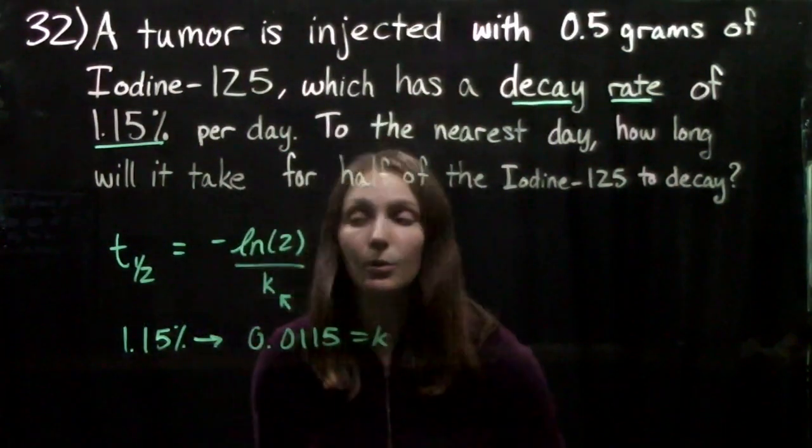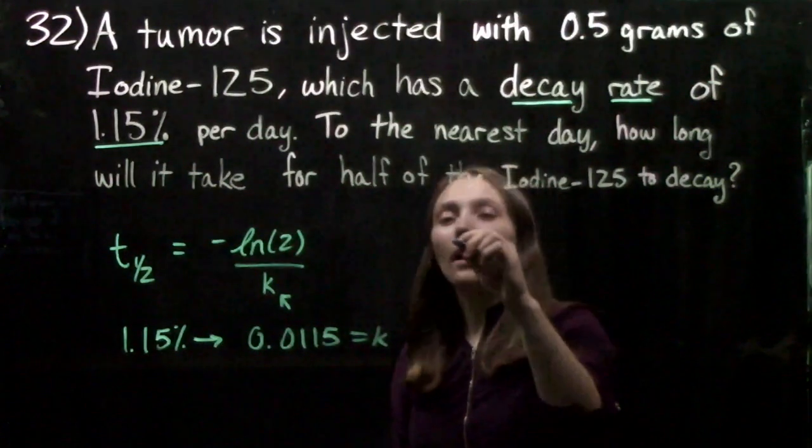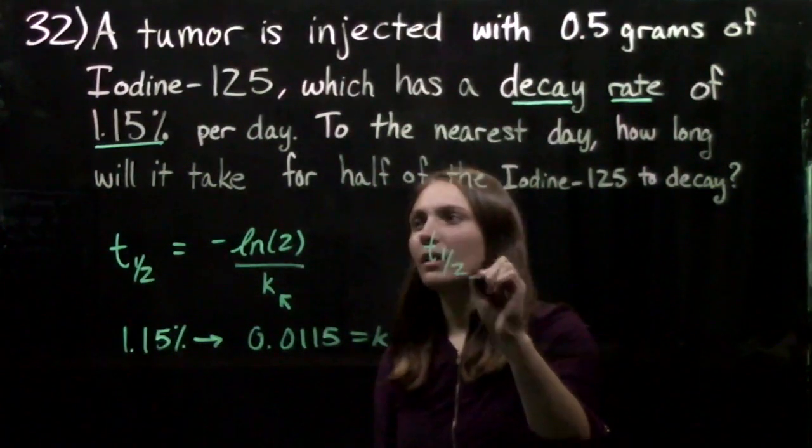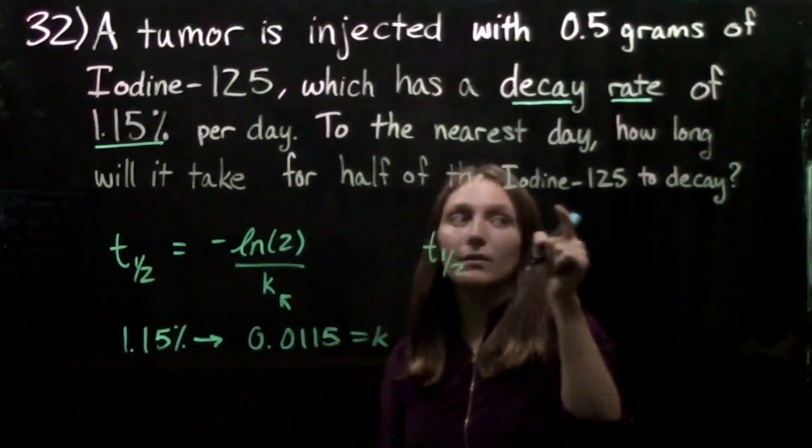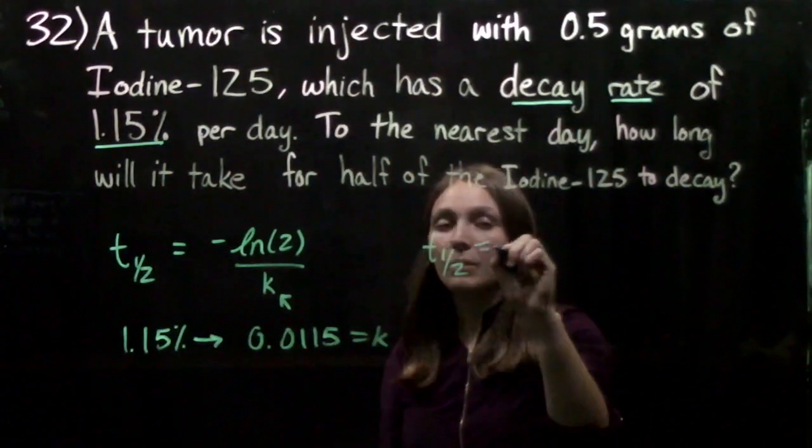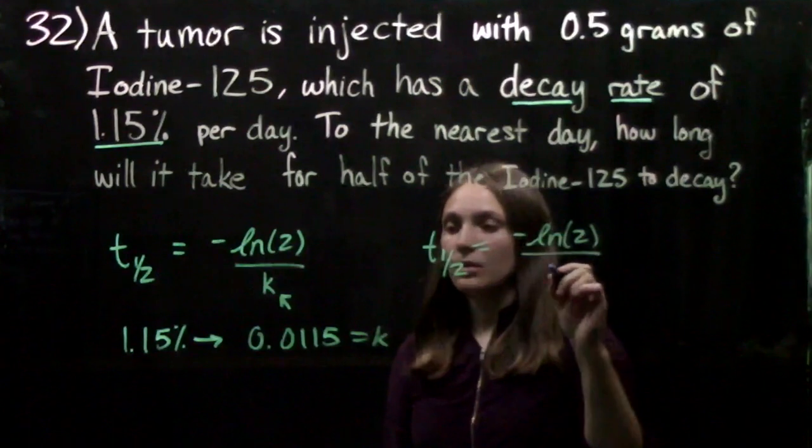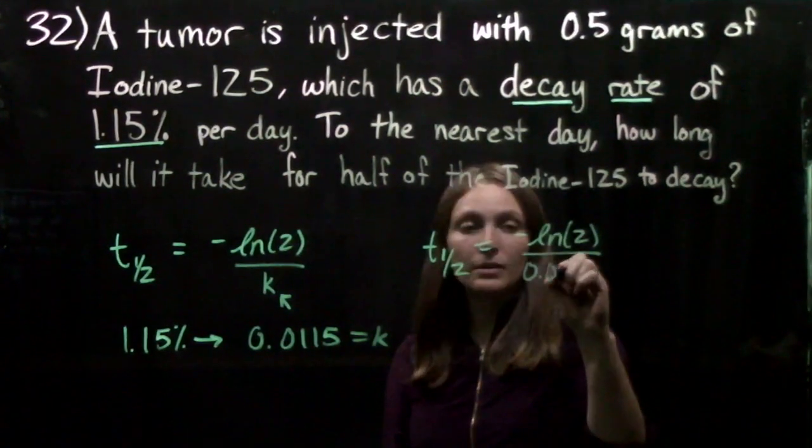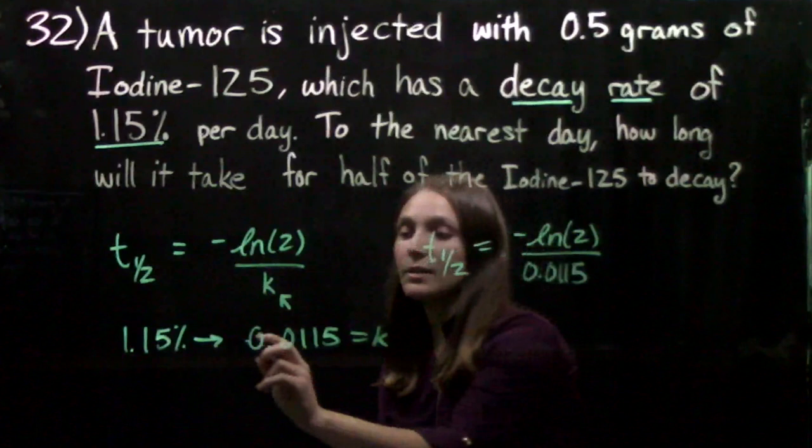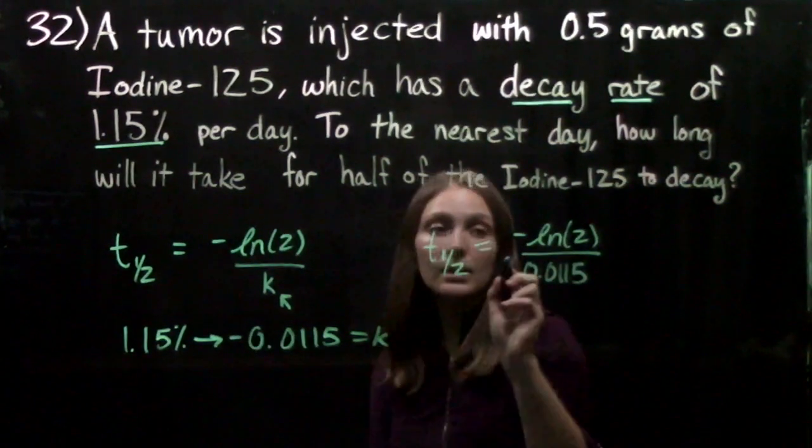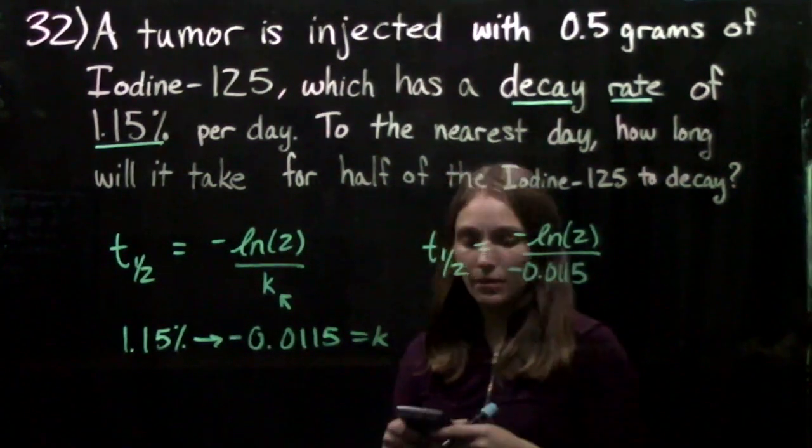So now all we have to do is plug it into our equation here and we'll get that the half-life, the time it will take for half of the iodine to decay, will be the negative natural log of 2 divided by 0.0115. And the k, since the decay rate is going to be negative, which will give us a positive here.